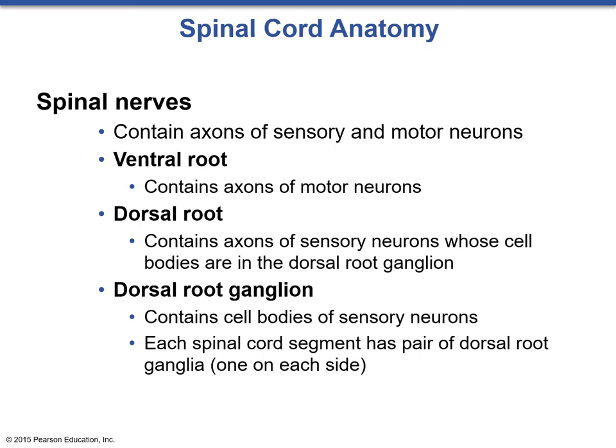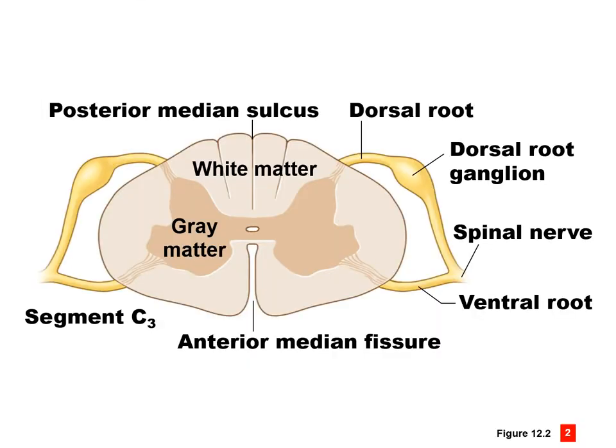Here we can see the spinal cord with spinal nerves branching off. Note the ventral root and the dorsal root coming off directly from the gray matter where those tracks would be. The dorsal root ganglion is that little bulge extending off the dorsal root. From there, the dorsal root ganglion merges with the ventral root to form the spinal nerve, which carries both sensory and motor information. The ventral root is motor only; the dorsal root and dorsal root ganglion are sensory only.